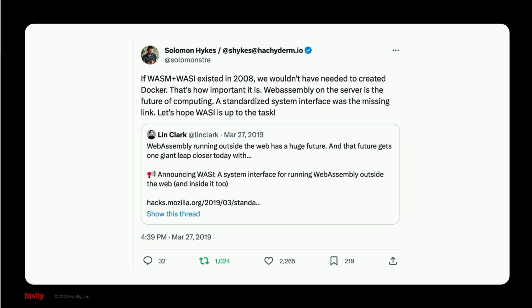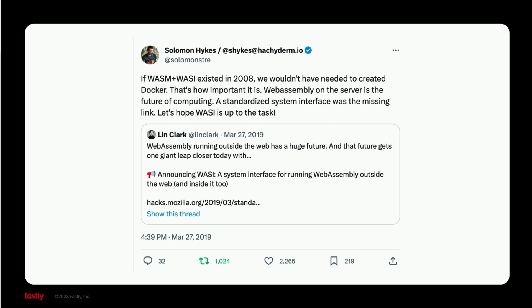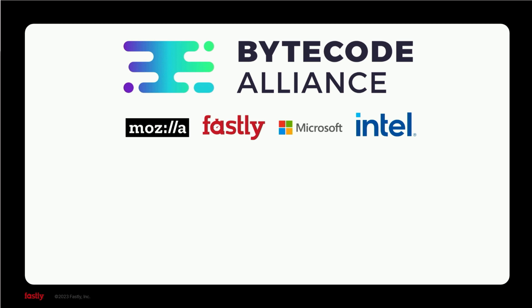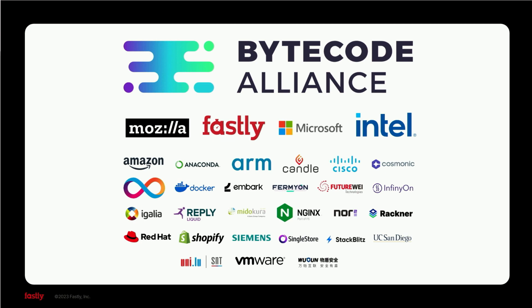This potential is why we at Mozilla partnered with Fastly to create the Bytecode Alliance, along with Microsoft and Intel. And it's why so many partners have joined us in the Bytecode Alliance, from Amazon and Shopify to Arm and Docker and Nginx. And it's also why we, as the team who had created and shepherded WebAssembly forward from its earliest days, decided to move together to Fastly.